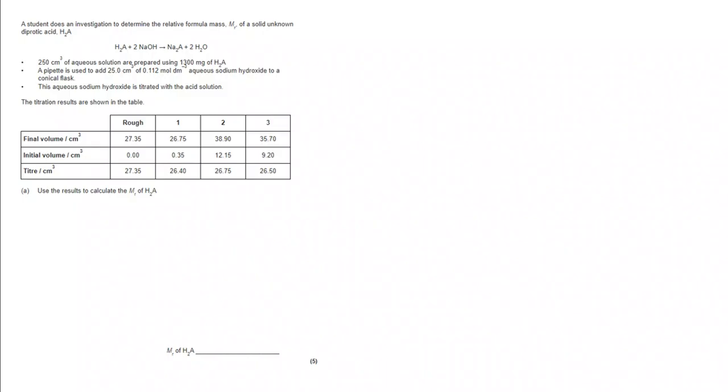Now, the first thing that we're going to do is work out the average titer. So let's take a look. We are going to find the mean. We are going to disregard the rough titer. We never include the rough titer, even if its value is concordant with your other values.